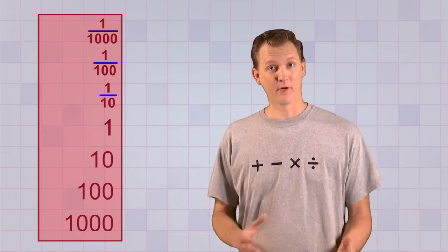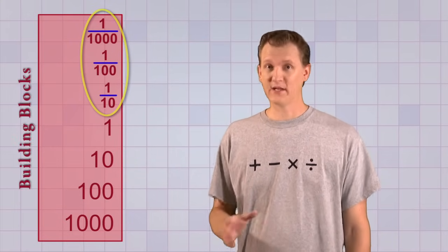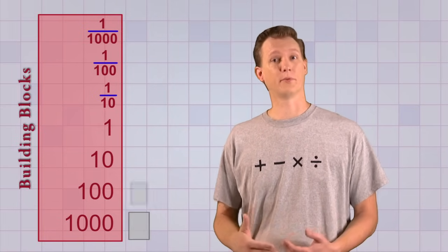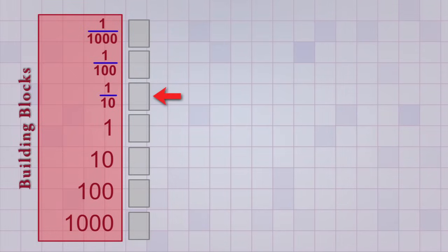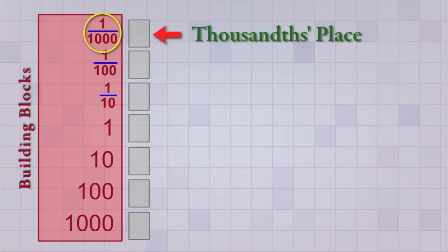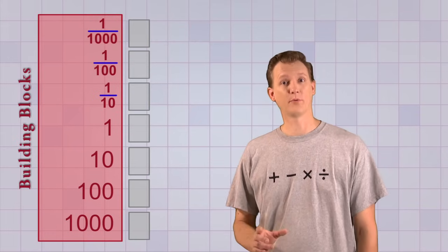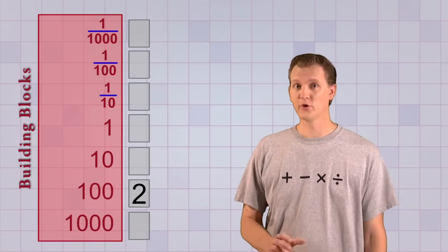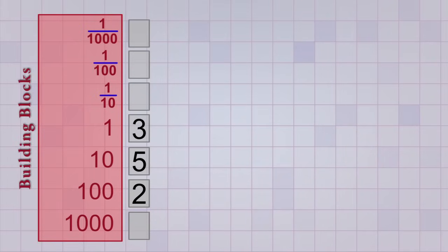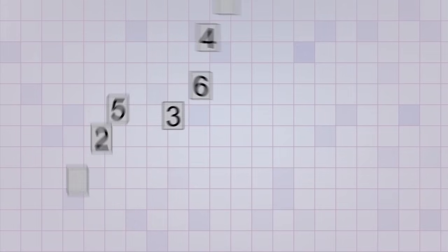Now that we have all these new smaller or fractional building blocks, it means that we can count smaller and smaller parts of things. But to do that, we're going to need a new number place for each of them. This will be called the tenths place because it counts tenths, and this will be the hundredths place because it counts hundredths, and this will be the thousandths place because it counts thousandths. To see how the new number places work, let's bring back our last example: two hundreds, five tens, and three ones. But this time, let's add six tenths by putting a 6 in the tenths place.